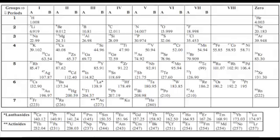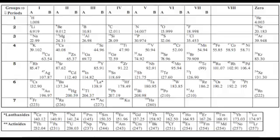This periodic table has a law commonly known as Mendeleev's Periodic Law, which states that the physical and chemical properties of elements are a periodic function of their atomic masses — sometimes called atomic weight. Mendeleev says that when elements are arranged in increasing atomic weight, the elements show variation in their physical and chemical properties.